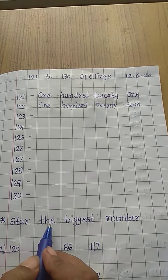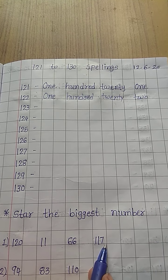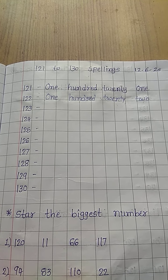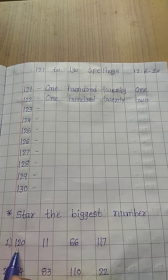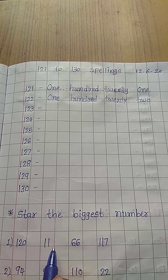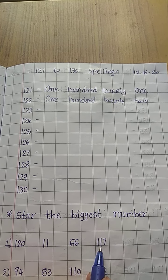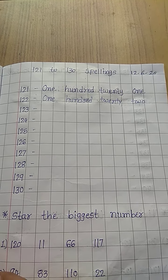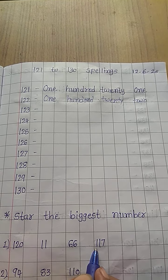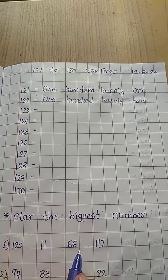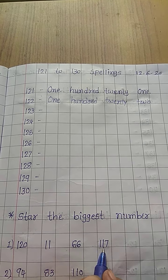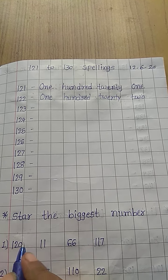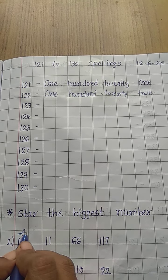Next exercise: find the biggest number. Here are some numbers given. Which is the biggest? First of all, look at the first digit. Here we have a 3-digit number, a 2-digit number, another 2-digit number, and another 3-digit number. So the 3-digit number is bigger. Look at the first digit: 1 and 1 — both are the same. Then look at the second digit: 2 and 1. The 2 is bigger, so 120 is the biggest. Start with 120.